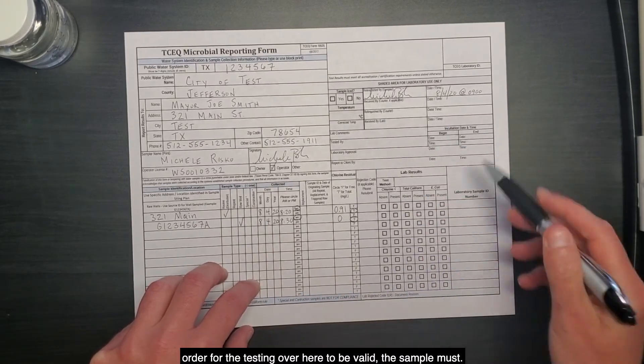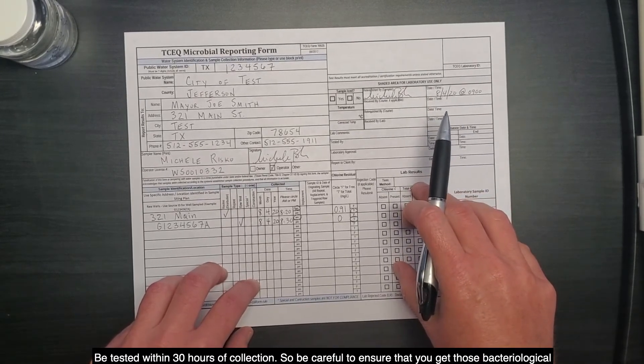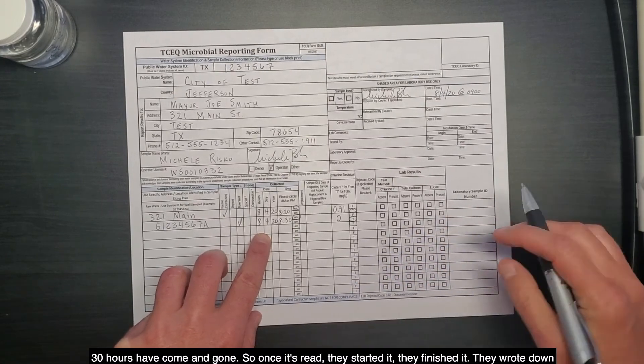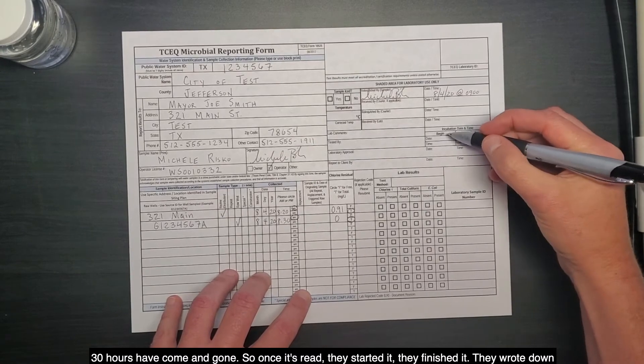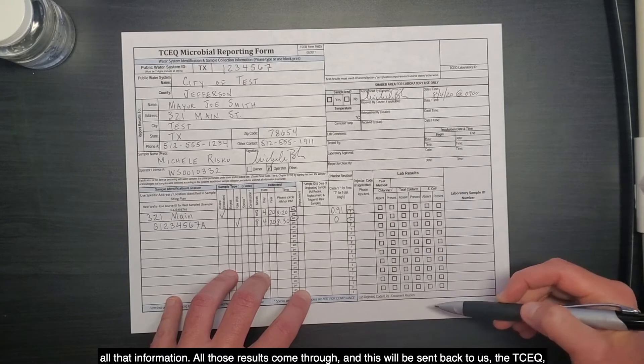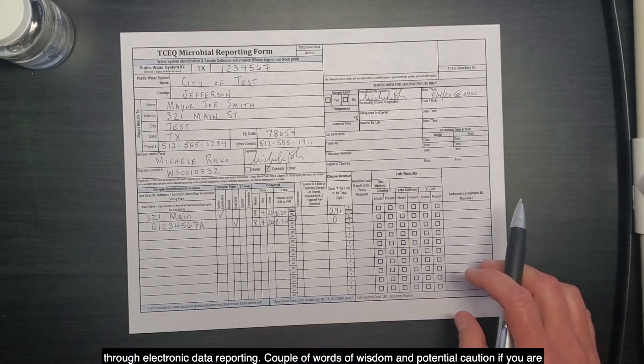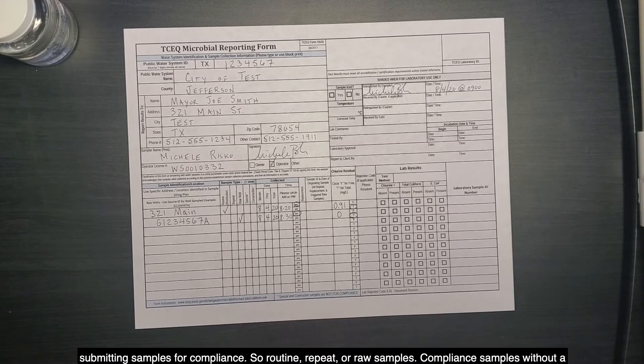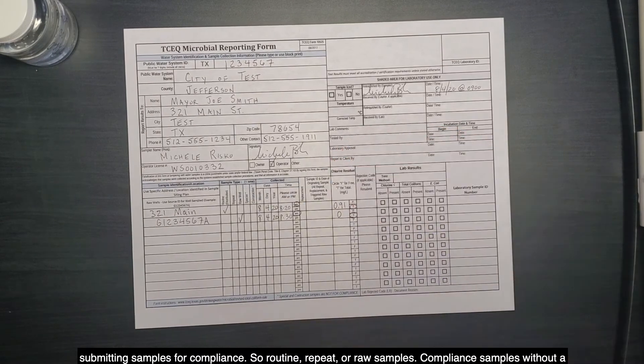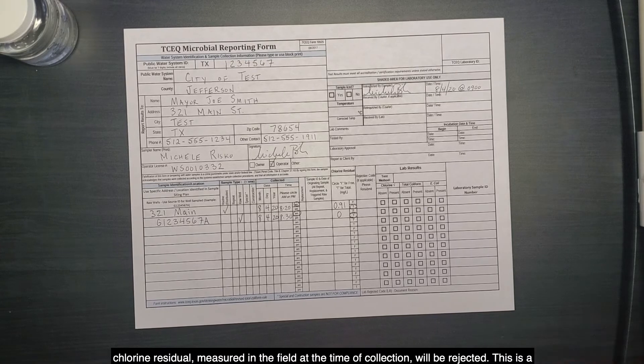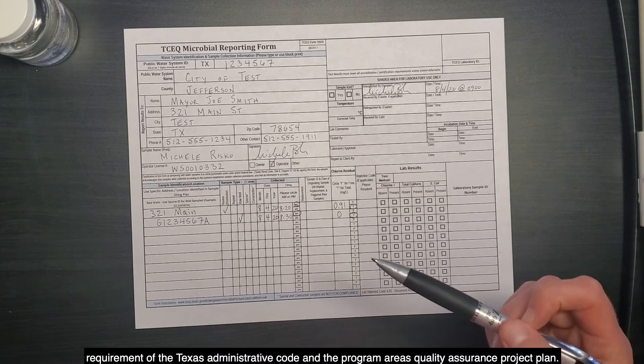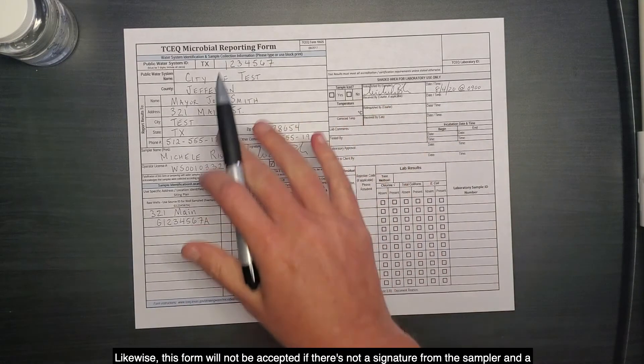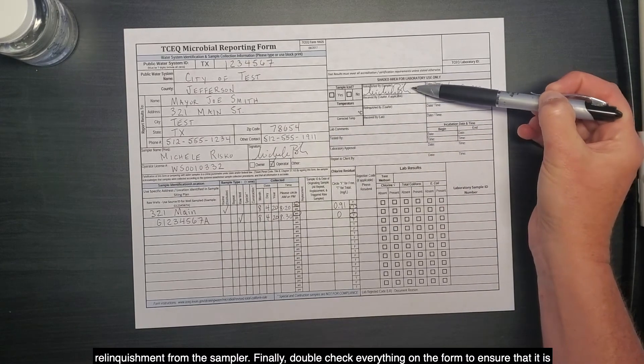Also, in order for the testing over here to be valid, the sample must be tested within 30 hours of collection. So, be careful to ensure that you get those bacteriological samples to the lab as quickly as possible to make sure they have time to process them before those 30 hours have come and gone. So once it's read, they started it, they finished it, they wrote down all that information, all those results come through, and this will be sent back to us at the TCEQ through electronic data reporting. A couple of words of wisdom and potential caution. If you are submitting samples for compliance, so routine, repeat, or raw samples, the compliance samples without a chlorine residual measured in the field at the time of collection will be rejected. This is a requirement of the Texas Administrative Code and the program area's Quality Assurance Project Plan. Likewise, this form will not be accepted if there is not a signature from the sampler and a relinquishment from the sampler.